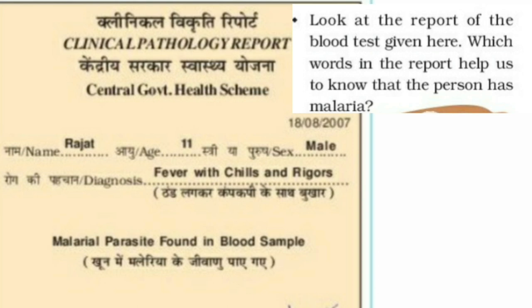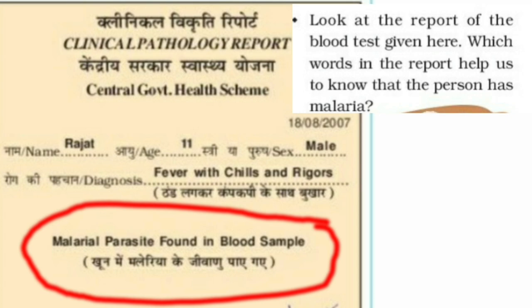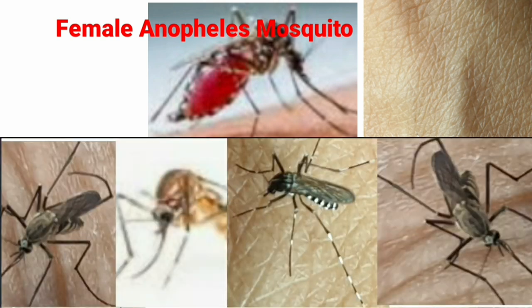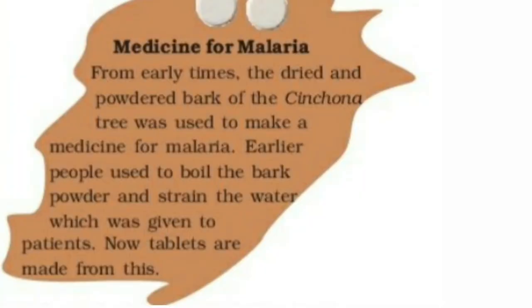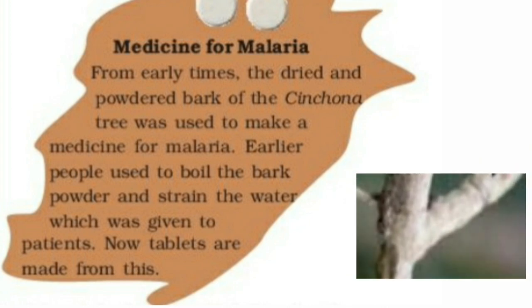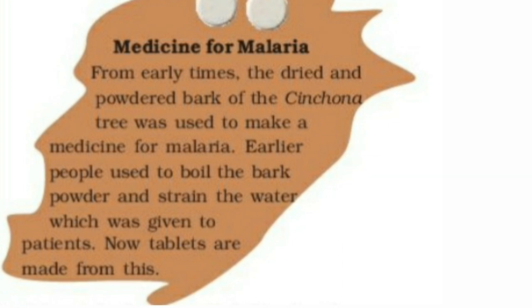Look at the blood test report given here. In the blood test report, it is clearly written that malarial parasite was found in the blood. The female Anopheles mosquito carries the malaria germ from an infected person to a healthy person. It is a brownish mosquito with spotted wings. Here are the different types of mosquitoes. From earlier times, the dried and powdered bark of the cinchona tree was used to make medicine for malaria. People used to boil the bark powder, strain the water, and give it to patients. Now tablets are made from this.